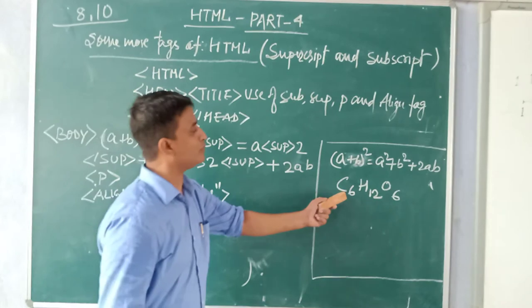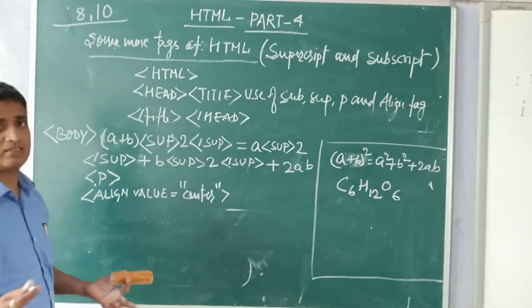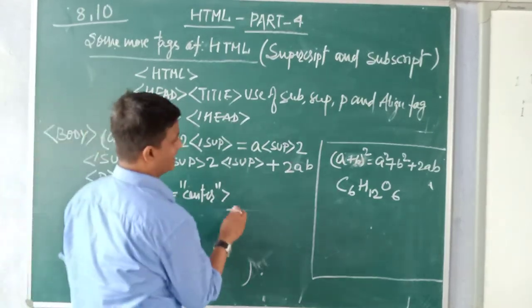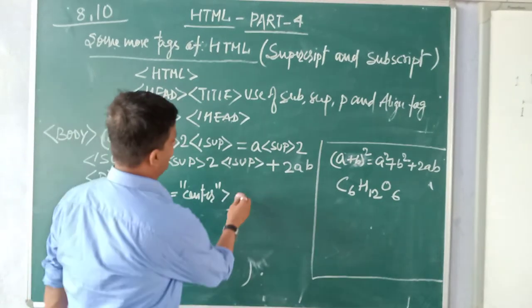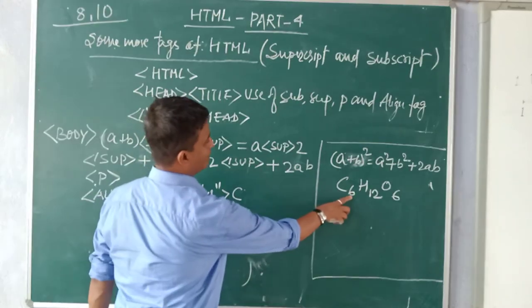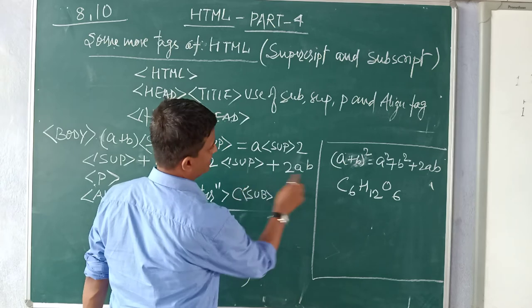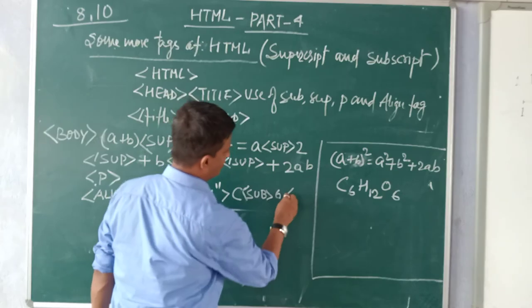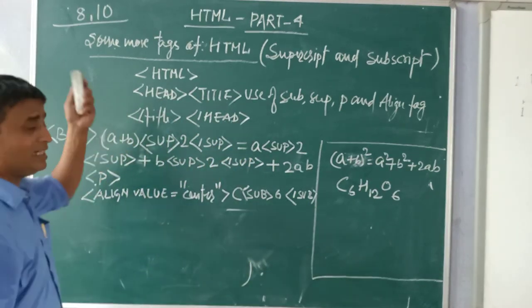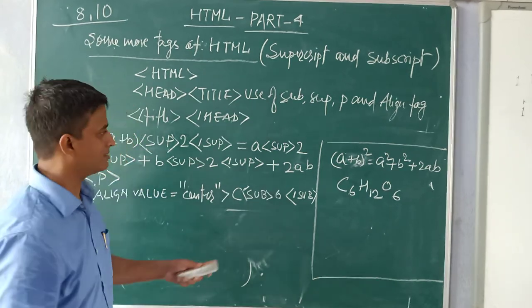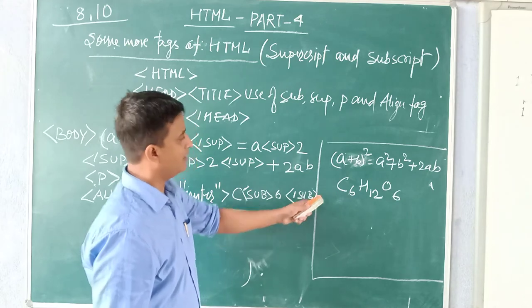Now I have to write the real things. Wherever you want to type in this section you can type. I am starting from C. First C then I want subscript. Sub. What is the value of subscript here? It is 6. Here 6. Let us note this. These all are container tags.